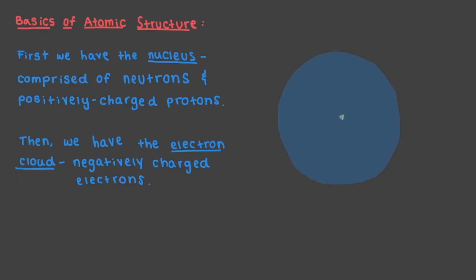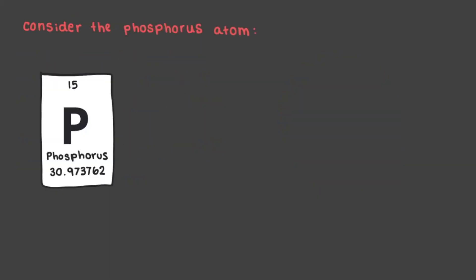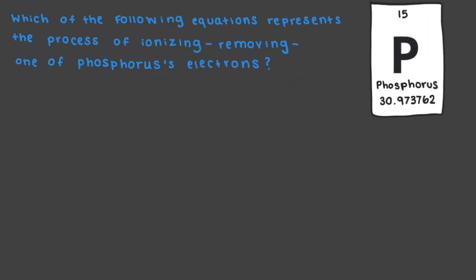We are going to ignore talking about neutrons, since they have no charge and they aren't that important to us. Consider the phosphorus atom with 15 protons and 15 electrons. Which of the following equations represents the process of ionizing, removing, one of phosphorus' electrons?